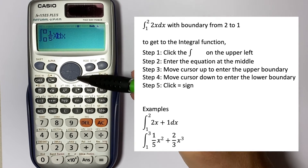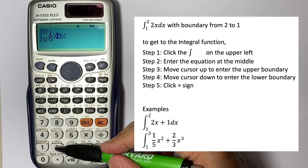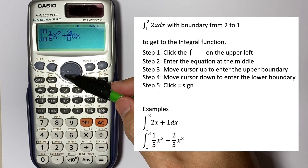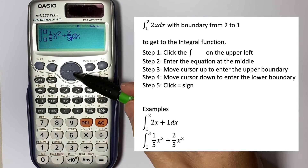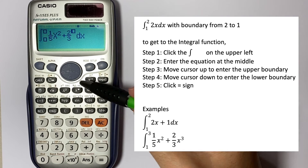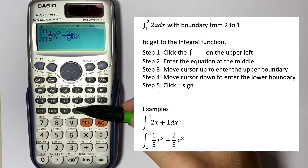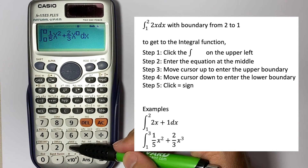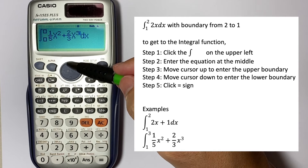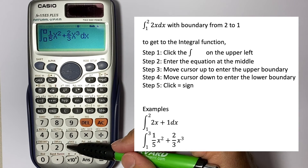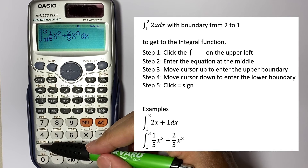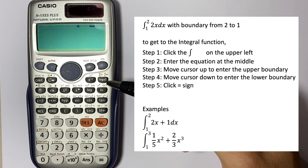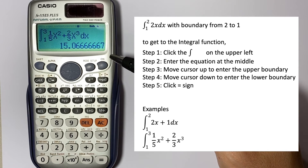For the integral of (1/5)x² plus (2/x³), enter the fraction 1 over 5, Alpha x squared, plus fraction 2 over x cubed. Move the cursor up, and set the boundary as upper bound 3, lower bound 1. That gives you the answer of 15.06.